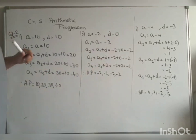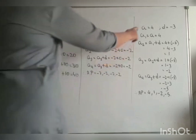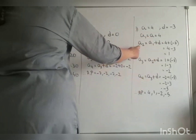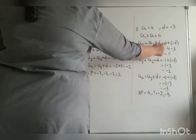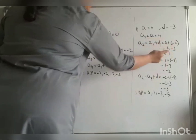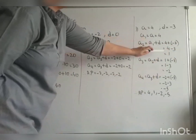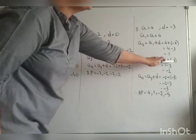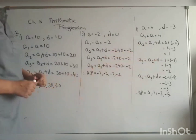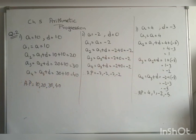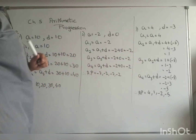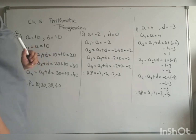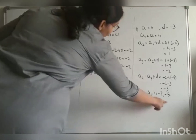Third part: A equals 4, D equals minus 3. A1 equals 4. A2 equals A1 plus D equals 4 plus minus 3 equals 1. A3 equals A2 plus D equals 1 plus minus 3 equals minus 2. A4 equals A3 plus D equals minus 2 plus minus 3 equals minus 5. So the A.P. is 4, 1, minus 2, minus 5.